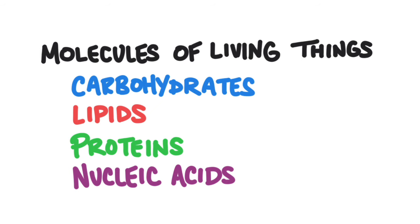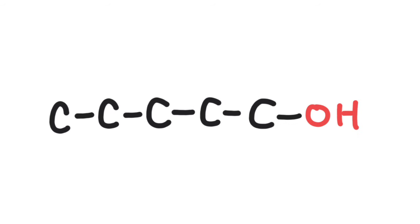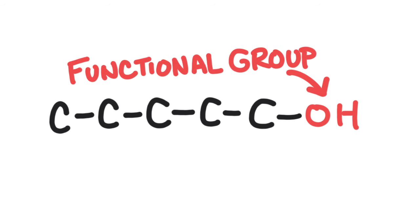There are 4 main categories of molecules in living things: carbohydrates, lipids, proteins, and nucleic acids. Each of these molecules is made up of a long chain of carbon atoms, and they differ by what other kinds of atoms are branching off of the carbon atoms. These branches are called functional groups because they give function to the carbon chain.